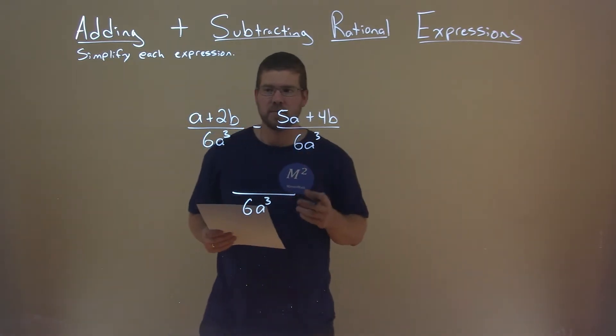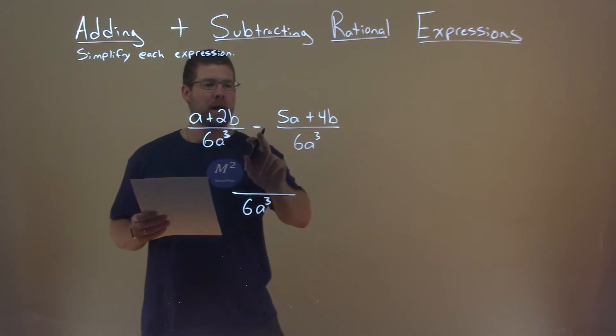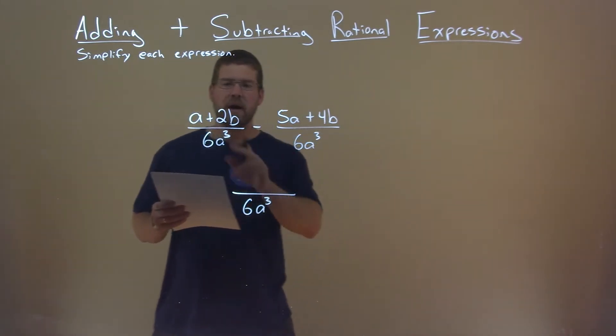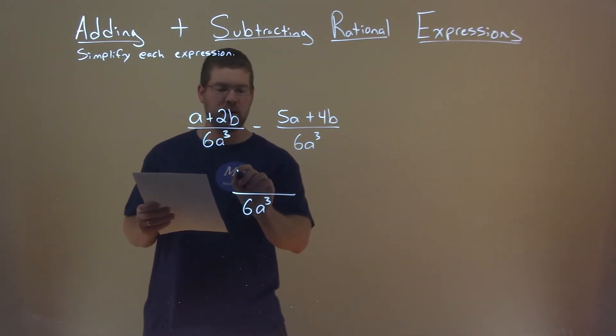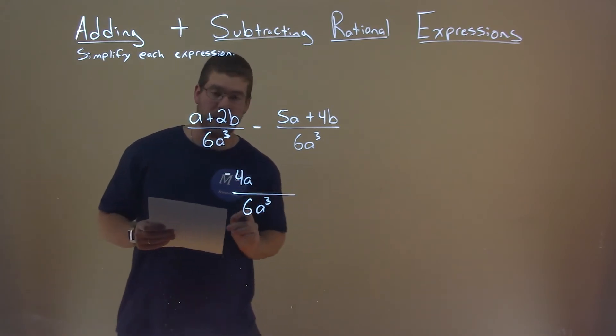So now let's look to add our like terms. We have a minus 5a; well, a minus 5a becomes 4a, and that's a negative 4a.